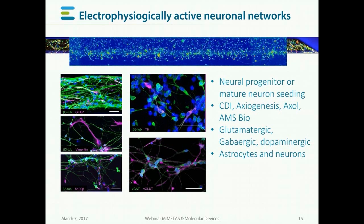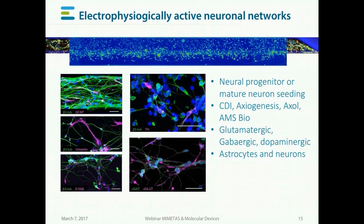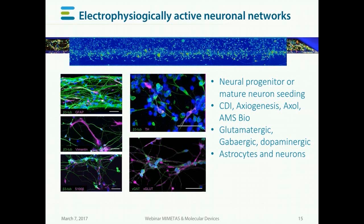We can also look at neuronal activity inside these models. We use a calcium-sensitive dye to show the spontaneous activity of the neurons in the organoplate — you can see the flickering, which is firing neurons inside the neuronal network. We can either use neuroprogenitor cells or seed mature neurons in these plates. For neuroprogenitors, it takes 6 to 8 weeks to differentiate into fully mature neurons. We use a range of different sources including CellularDynamics, Axiogenesis, Axol, and AMS-Bio, and we can seed glutamatergic, GABAergic, or dopaminergic neurons, often co-cultured with astrocytes and other accessory cells.